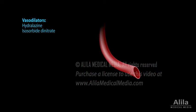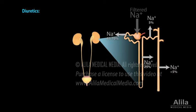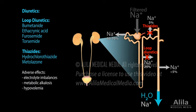Vasodilators reduce blood pressure and are usually used for patients who cannot tolerate ACE inhibitors or ARBs. Side effects include nausea, palpitations, joint pain, and rash. Diuretics are often prescribed to relieve fluid retention. Loop diuretics are most powerful and typically used for most patients. Thiazides are less effective, but they also have a vasodilation effect and are thus preferred for patients with hypertension but only mild fluid retention. Major side effects include electrolyte imbalances, metabolic alkalosis, and hypovolemia.